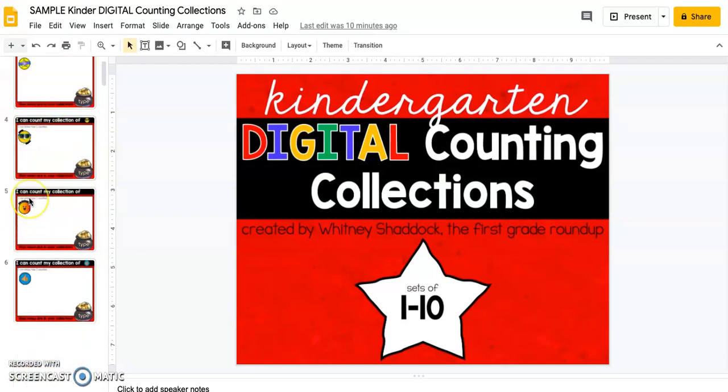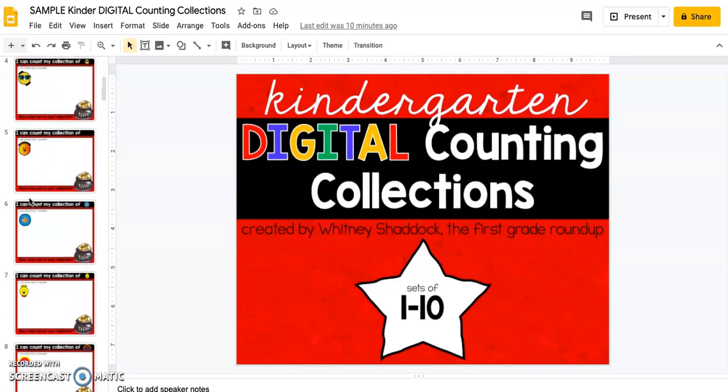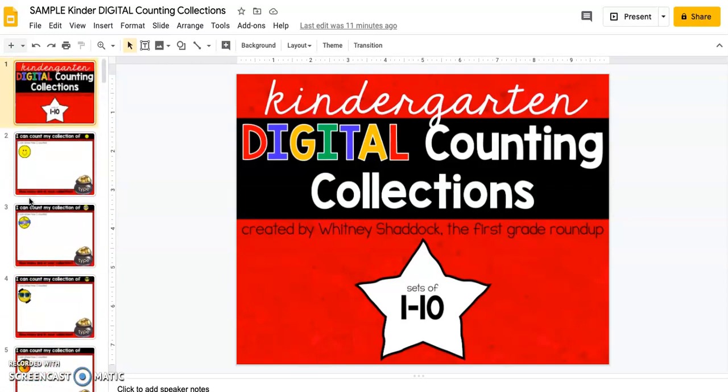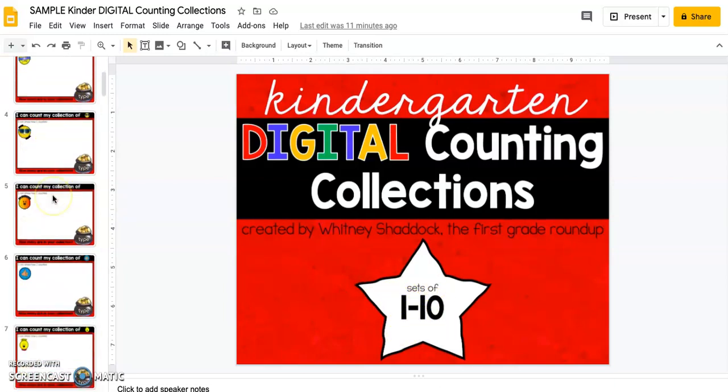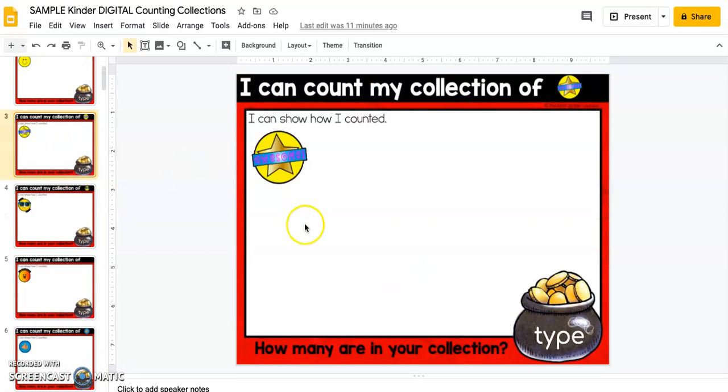So you'll notice that the mats are color-coded. The color-coding matches the colors on the answer keys from the paper resource just to keep them the same. And so this red Kindergarten Counting Collections mat has objects, sets of objects between the numbers 1 through 10. And then you'll notice the slides have the goal on there. They have the area for them to show their counting, an area for them to tell the total amount, and then it's got the movable objects for them to count.